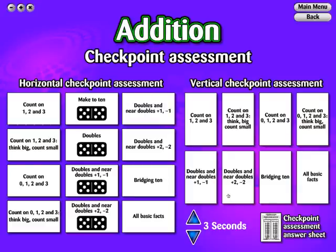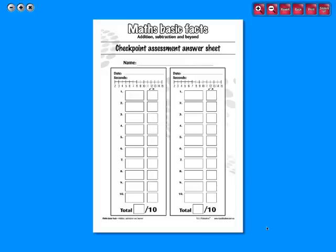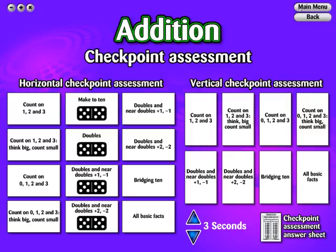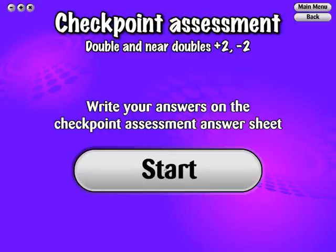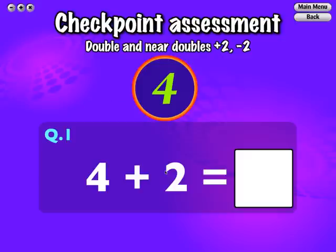Check Point Assessments are given for each strategy. A Check Point Assessment Answer Sheet can be printed out for students to write their answers on. An up and down arrow will allow you to change how many seconds a question will appear on the screen, from 2 to 15 seconds. Once inside the Assessment Check Point, press Start.